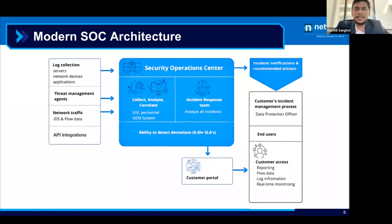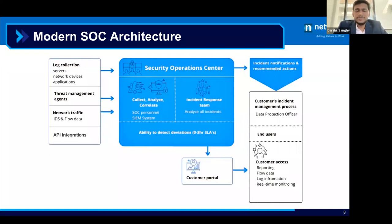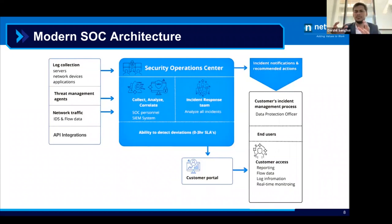The modern SOC also includes a critical component: flow data and IDS data. Flow data is your switch data, backbone traffic, which gives a lot of insights on what activities are happening. Even for IoT devices like CCTV cameras or printers, if an attacker tries to exploit them, we must have visibility on that. Logs, flow data, and API integrations act as ingestion sources for the SOC services.